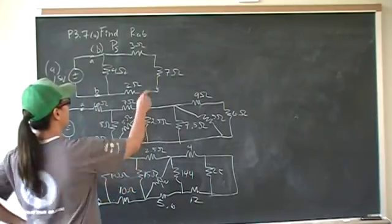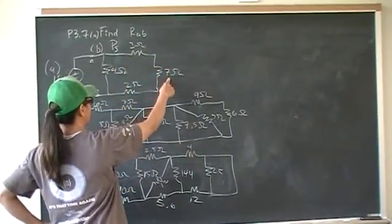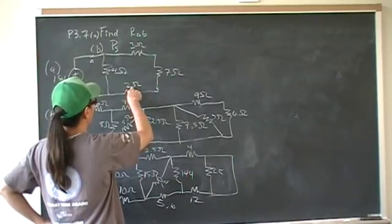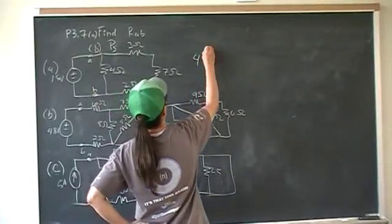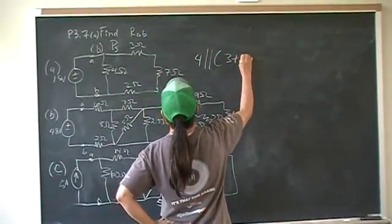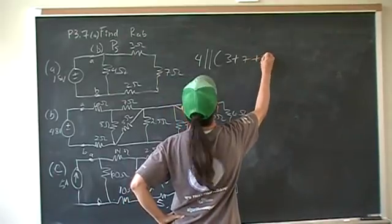The first one's pretty easy. We have 3 in series with 7, in series with 2, and that is in parallel with 4. So what we have is 4 in parallel with 3, in series with 7, in series with 2.